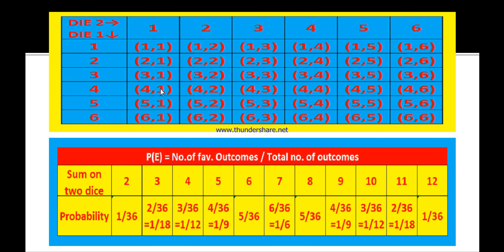To get sum 3, the ordered pairs are (2,1) and (1,2). There are 2 favorable outcomes, so the probability is 2 by 36, and the simplified value is 1 by 18.